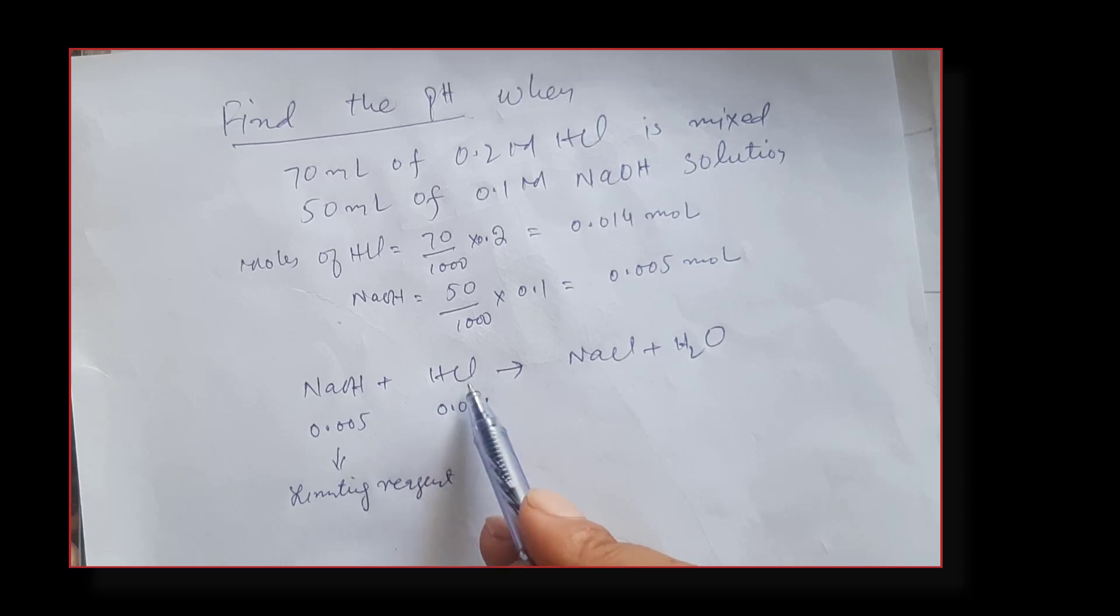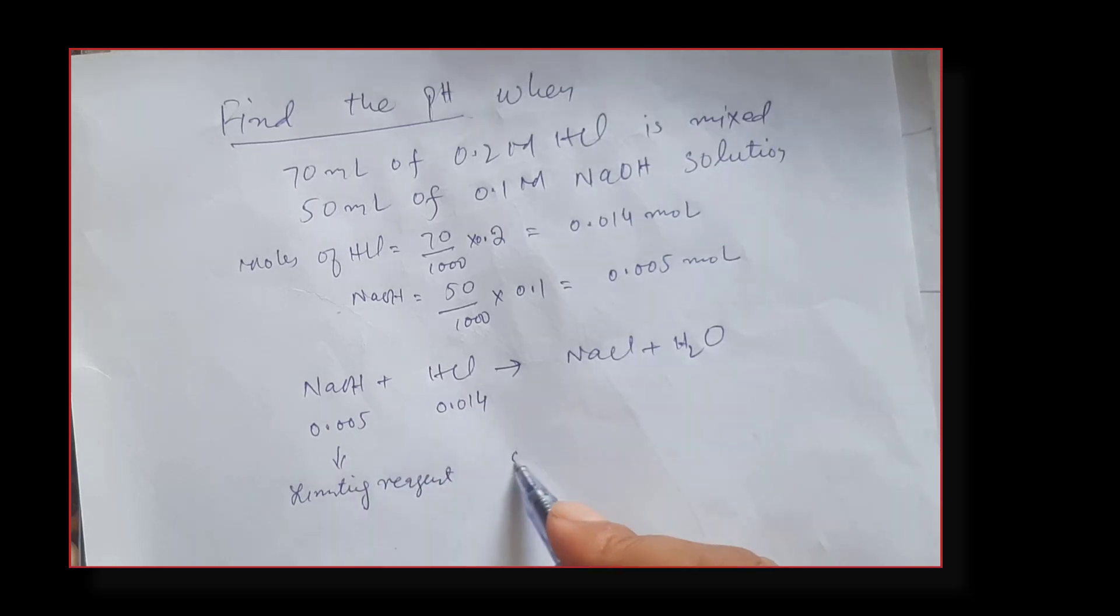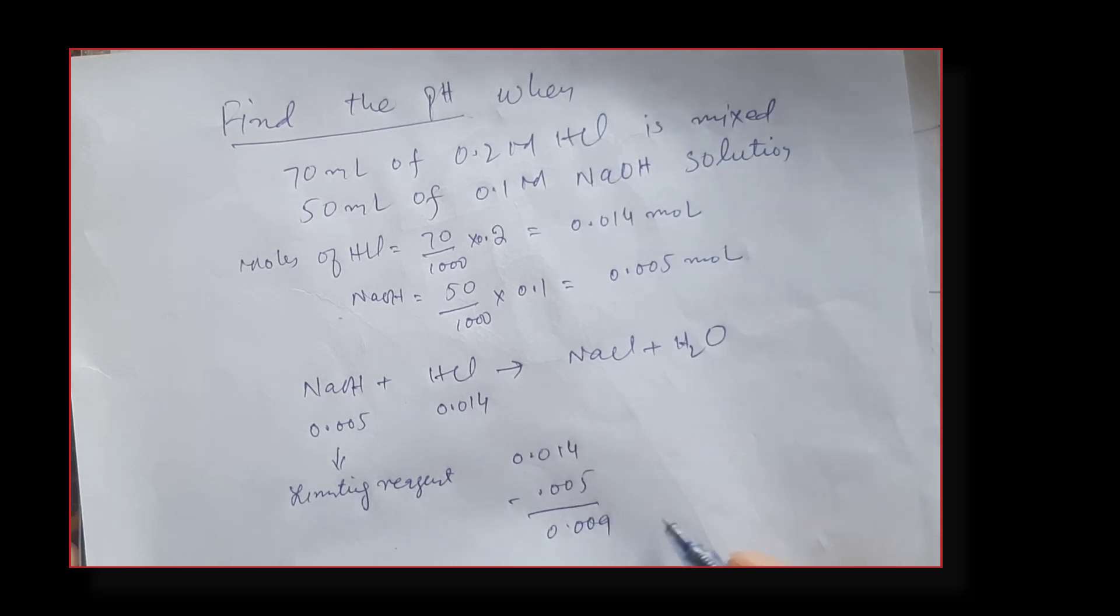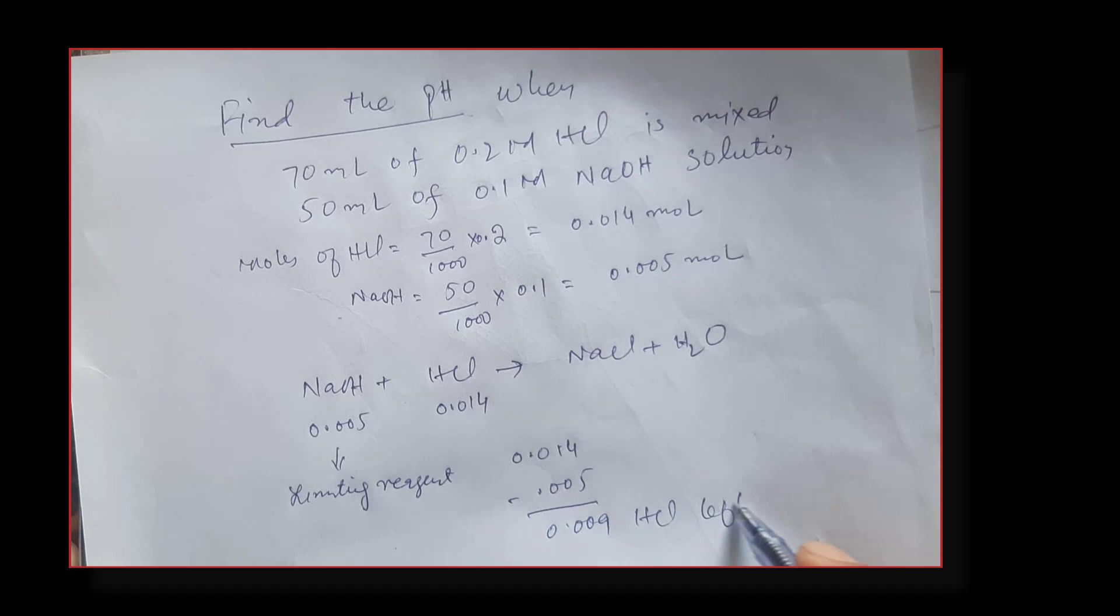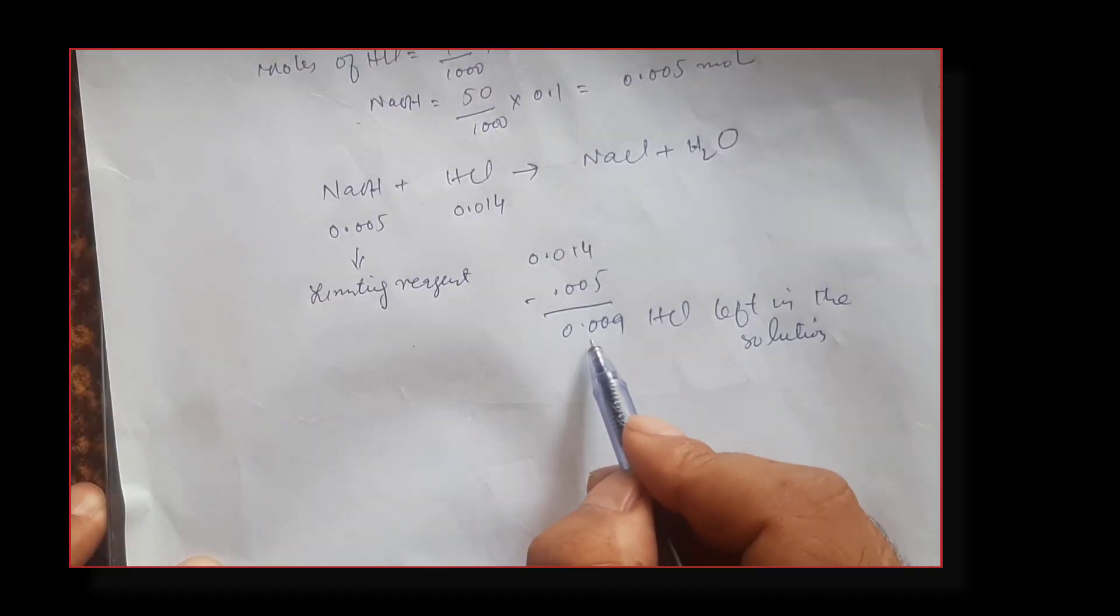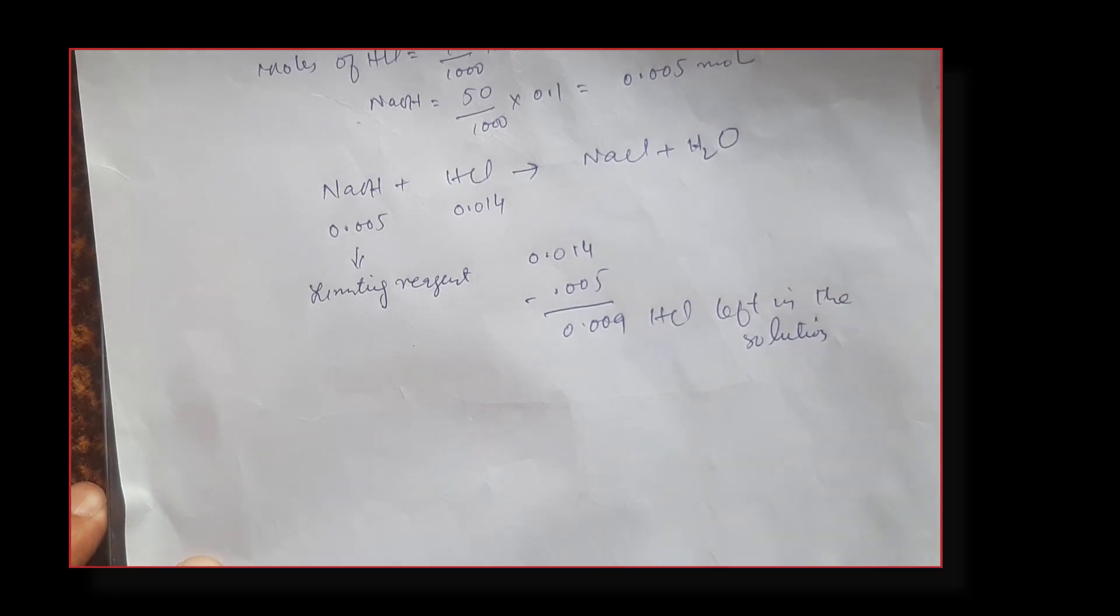How much HCl will be left behind? You can simply subtract 0.005 from 0.014. Let's do it: 0.014 minus 0.005 gives us 0.009 moles of HCl left in the solution. This is the number of moles of HCl left.